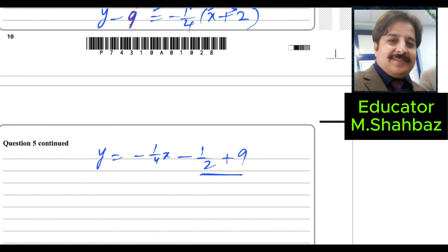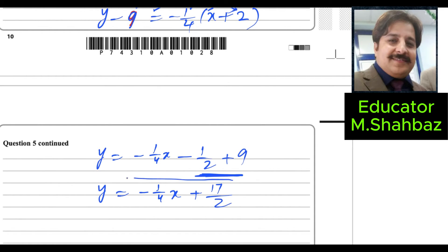Combine the constant terms — they are unlike x terms so solve them together. Using a calculator, minus 1/2 plus 9 gives positive 17 over 2. Therefore the required equation of line L1 is y = -1/4·x + 17/2.